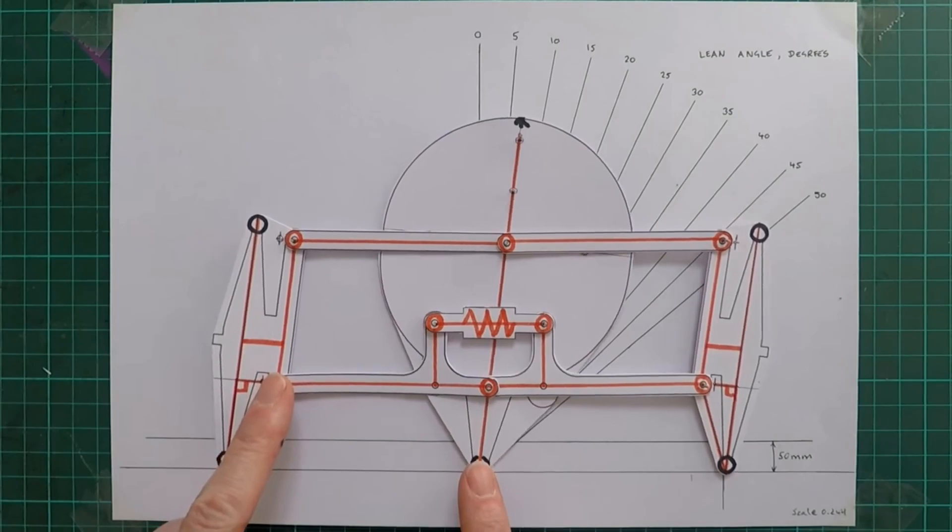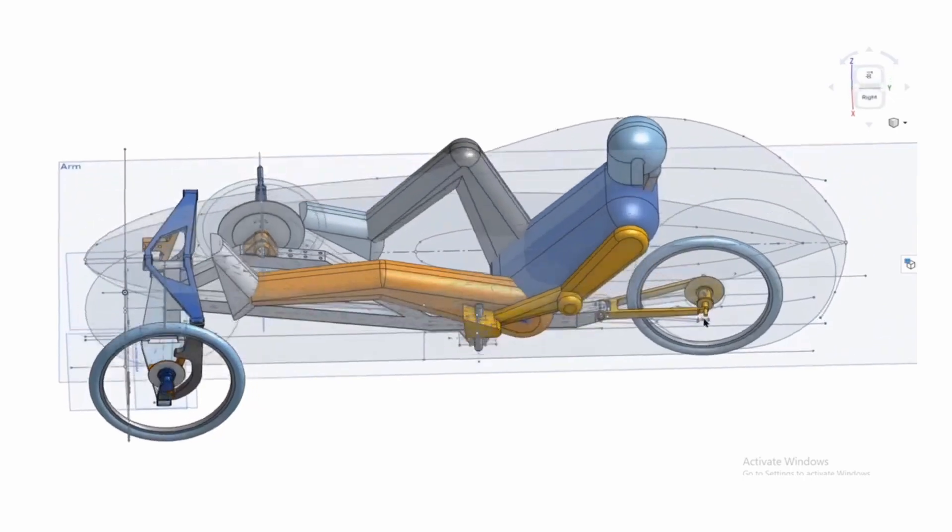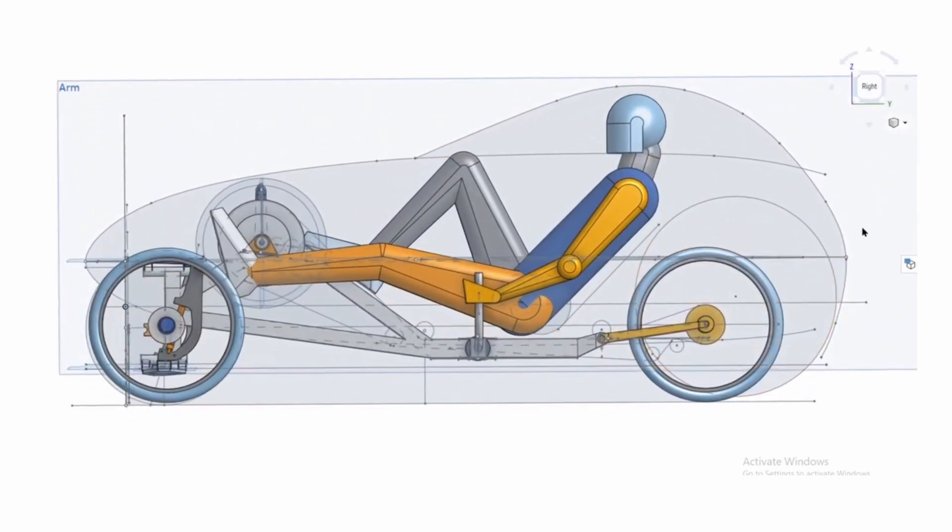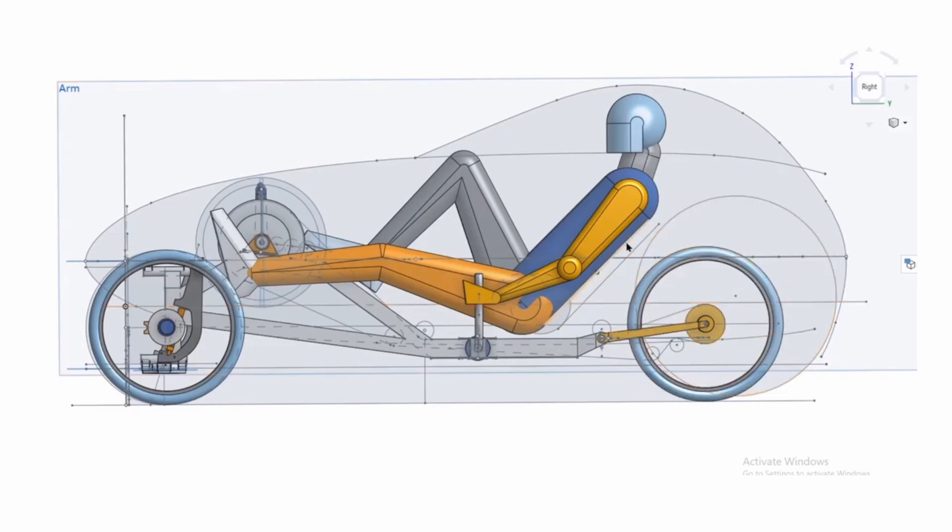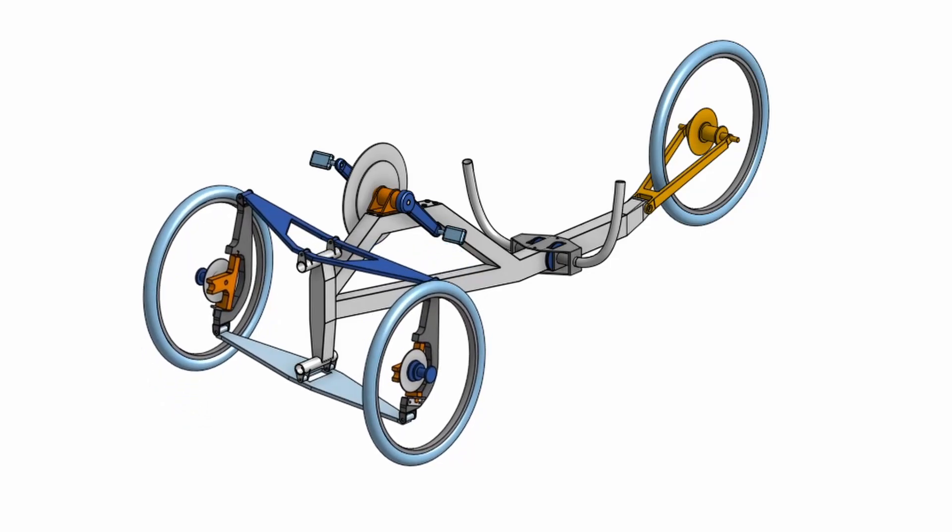This is the third video in the series on my tilting reverse trike velomobile project. So it might be worth watching the first two videos before you watch this one, so that you understand some of the concepts I'm going to be discussing further in this video. In my first video I looked at the tilting mechanism and in the second I looked at the overall velomobile design.